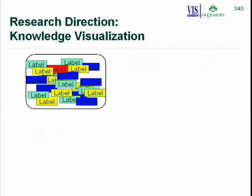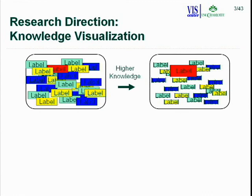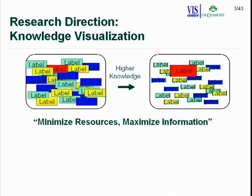At the Visualization Center at Charlotte, we've been interested in knowledge visualization. The idea is that if you have a screen full of overlapping labels, you can extract higher knowledge from the scene or from the user and focus resources on what you want the user to see — minimizing resources like CPU time, polygon count, or pixels, while maximizing information given to the user.